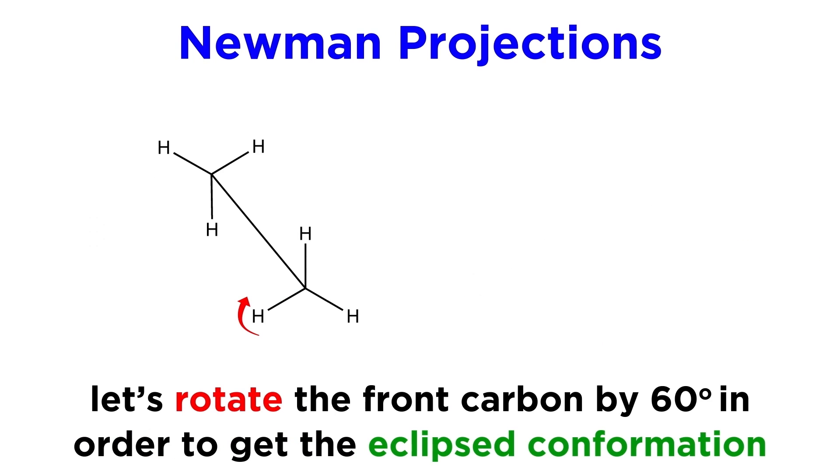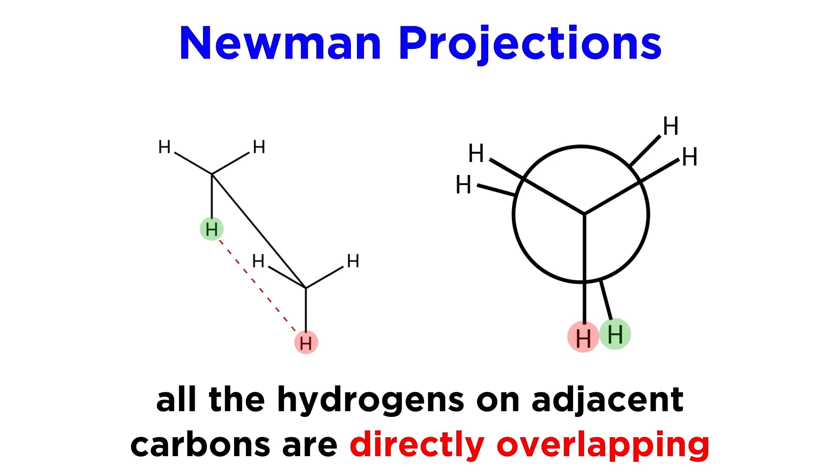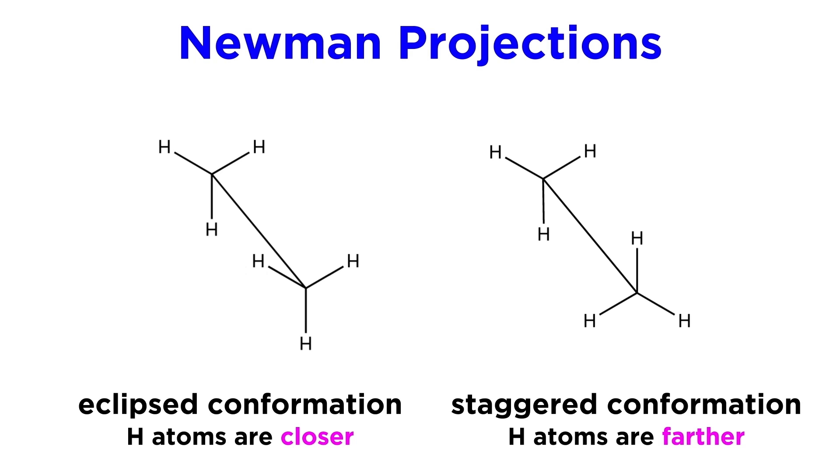If we rotate the front carbon, we can allow ethane to move towards another conformation, which we call an eclipsed conformation. This is where the hydrogens on adjacent carbons are directly overlapping. They are closer than they were in the staggered conformation, because there is only this distance separating them, as opposed to the additional lateral distance when they were staggered, which required finding the hypotenuse of this triangle, and the hypotenuse is always the longest side of a right triangle.